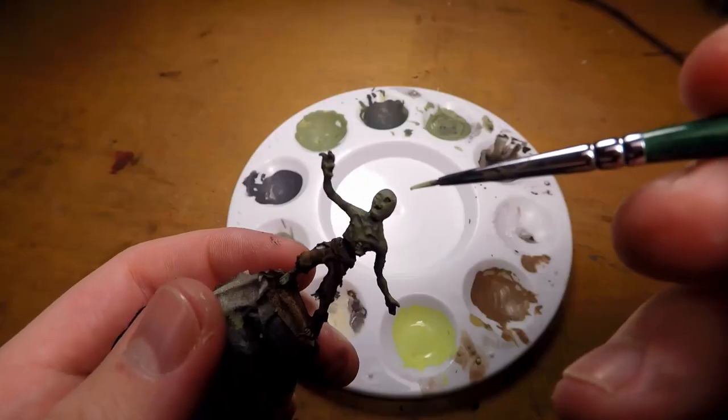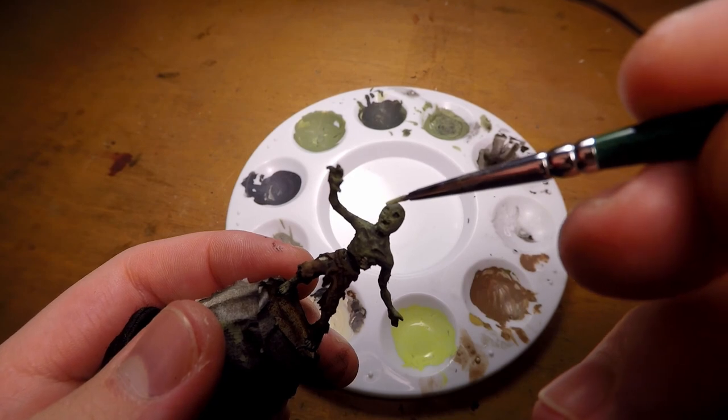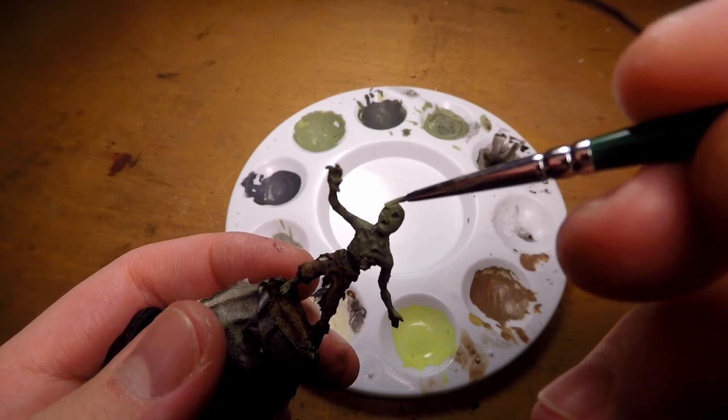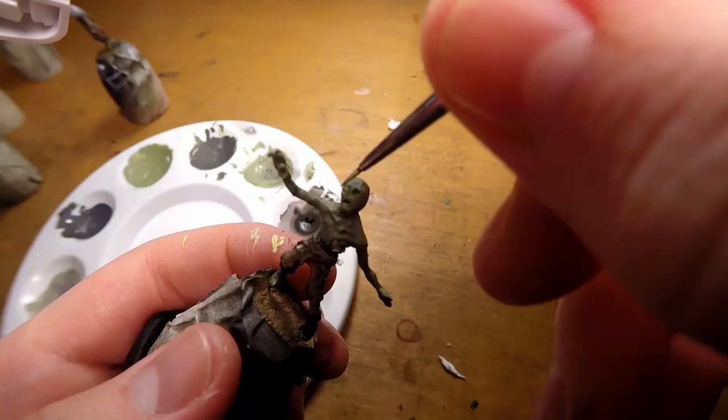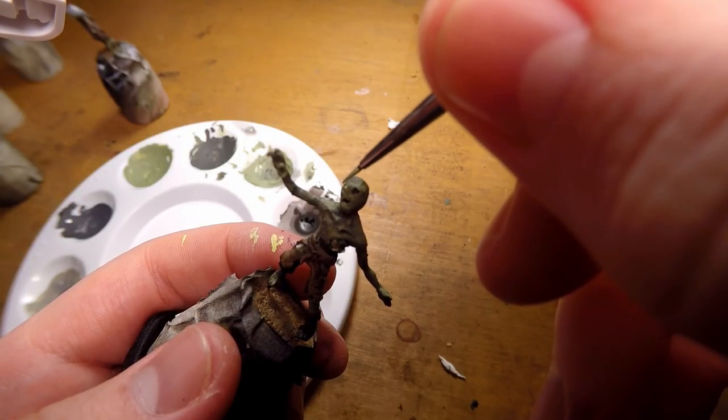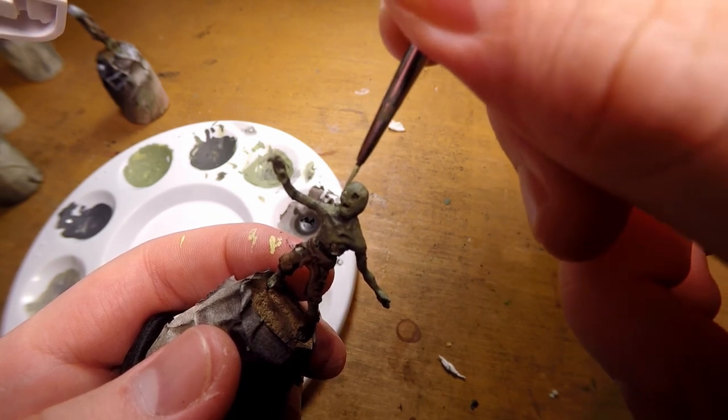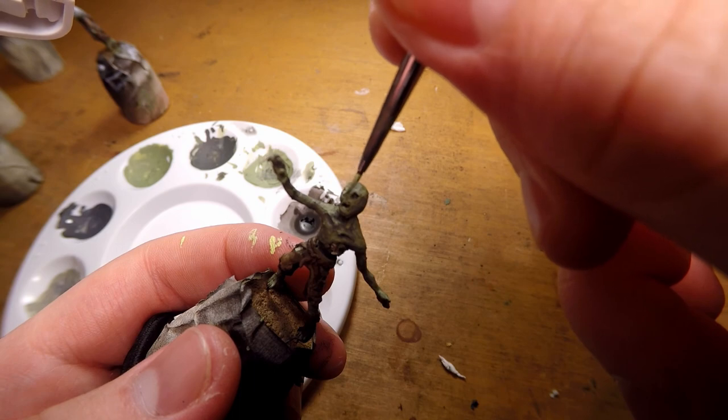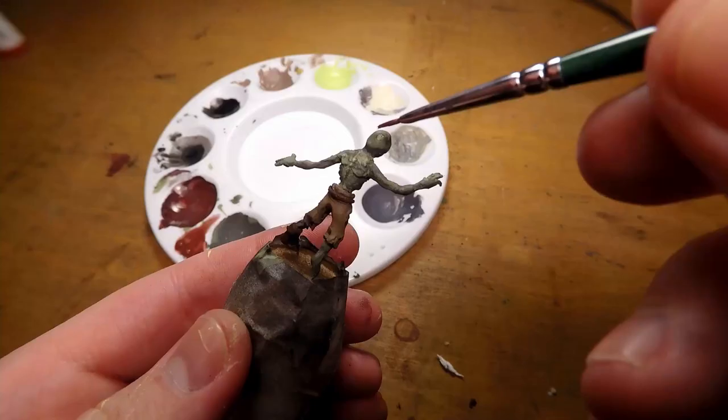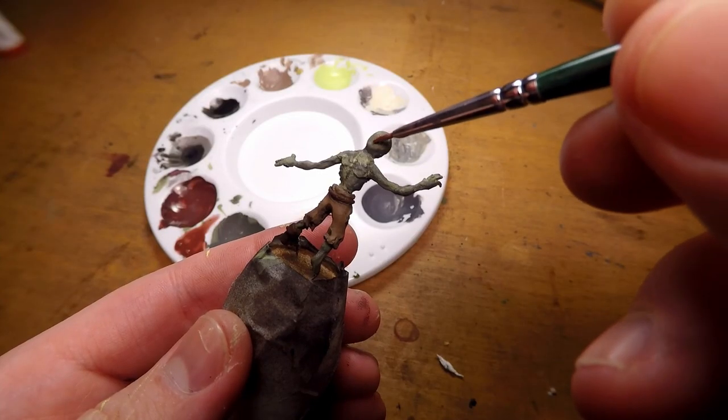Then I can move on to paint the eyes. For this I'm using a kind of neon greenish yellowish color. Unfortunately it's a little bit out of focus. And once I've done that I actually do a dry brushing of that same color. Just in the parts immediately around the eye. To kind of give it this glowing feel.